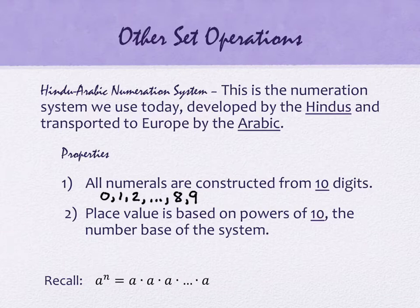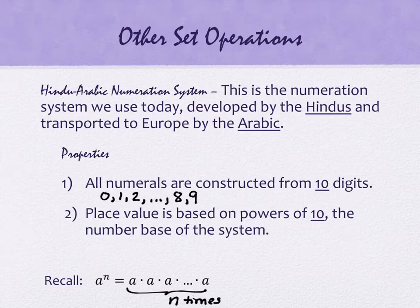One more thing we're going to need here in a minute: powers — the power rule. A to the N means A times itself N times, and we can abbreviate that by writing it as a power with an exponent N. We're going to be using that as we work our way along.